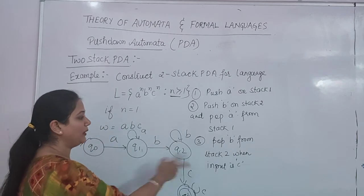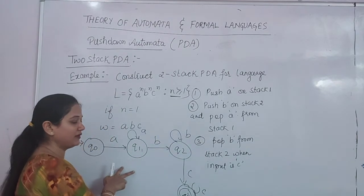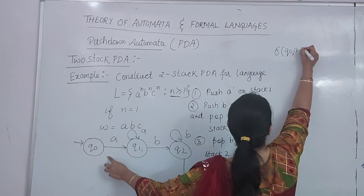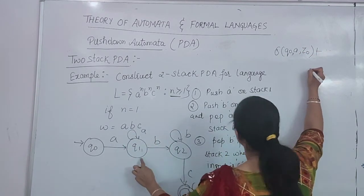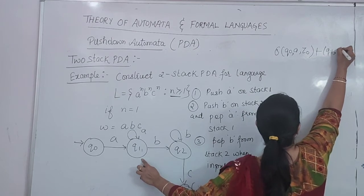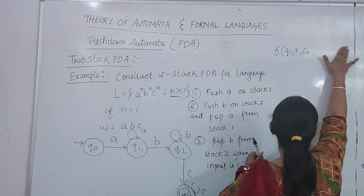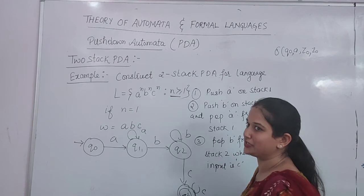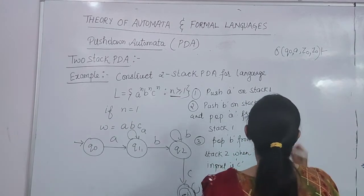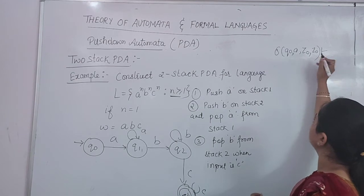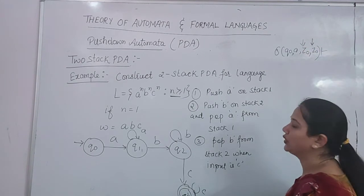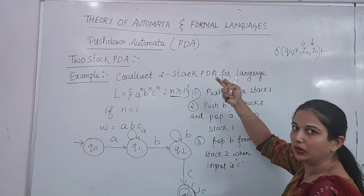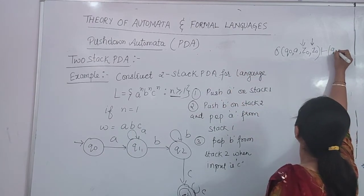And for these we will write the transition rules by combining these 3 operations with this transition diagram. We are at state Q0, reading A as input symbol, and Z0 will be the initial symbol. One thing to note: we have to take 2 stacks this time, so both stacks should have Z0. The first symbol represents stack 1 and the second symbol represents stack 2, as discussed when we write the ID.